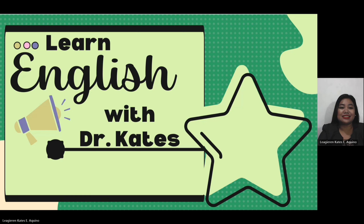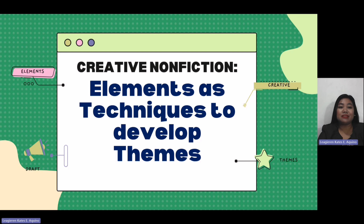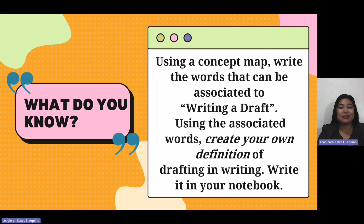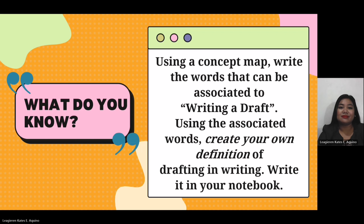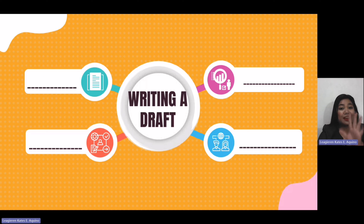For this session, we will have the Creative Nonfiction Elements as Techniques to Develop Themes. But before that, let's check your schema or your background knowledge. In your notebook, make a concept map and write the words that can be associated with writing a draft. Then, using the associated words, create your own definition of drafting in writing. You may pause this video for 5 minutes or use this concept map for your reference. In your notebook, label this activity as Draft Concept Map.